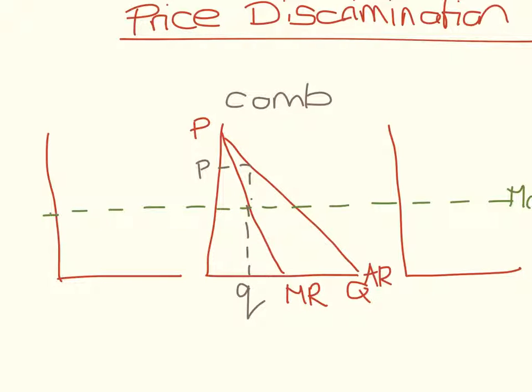So what we're getting when we have price discrimination, or third degree price discrimination to be exact, is we've got a market where there's maybe inelastic demand, and then we have a market where there's elastic demand.